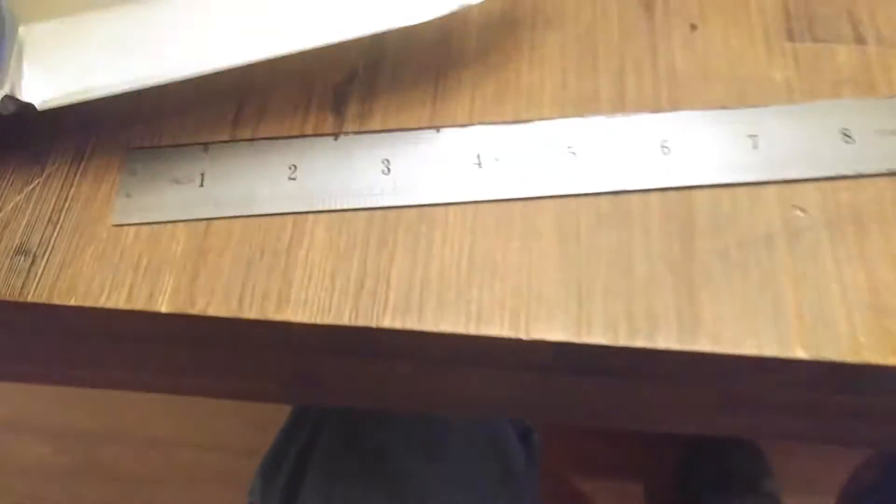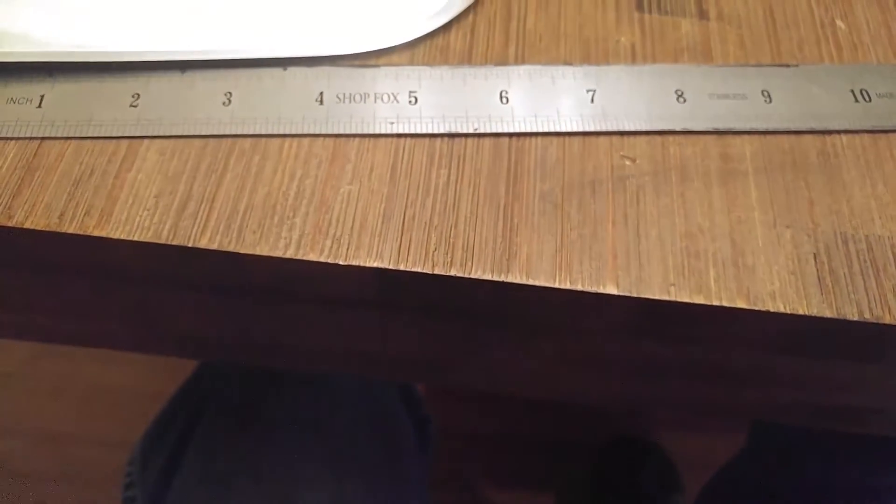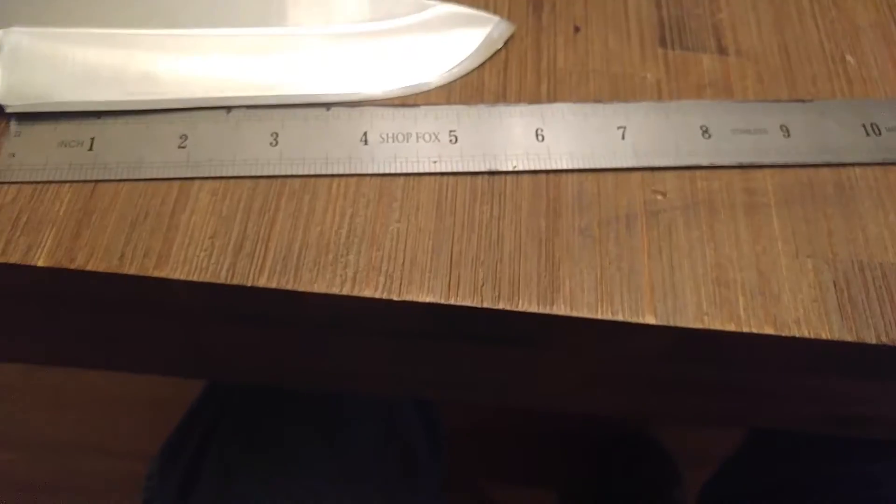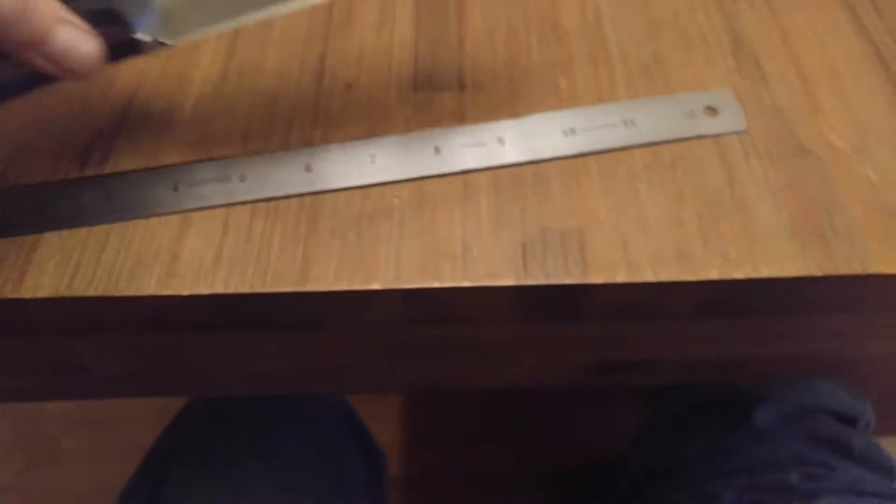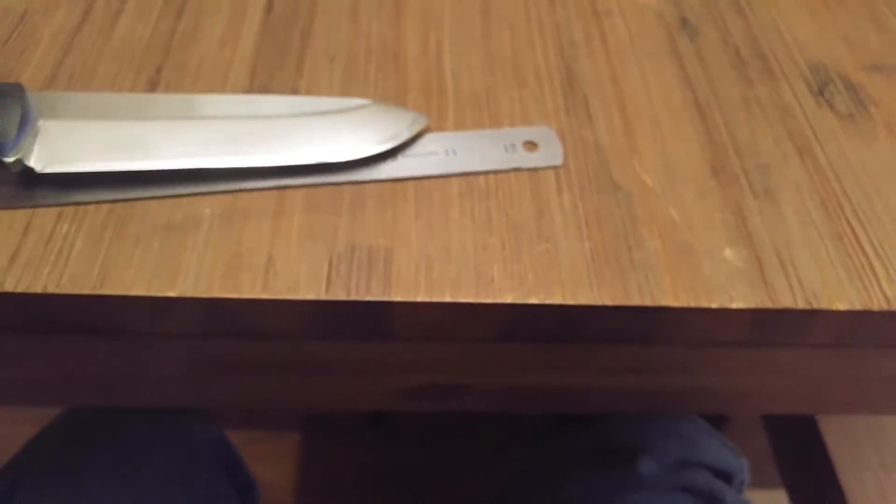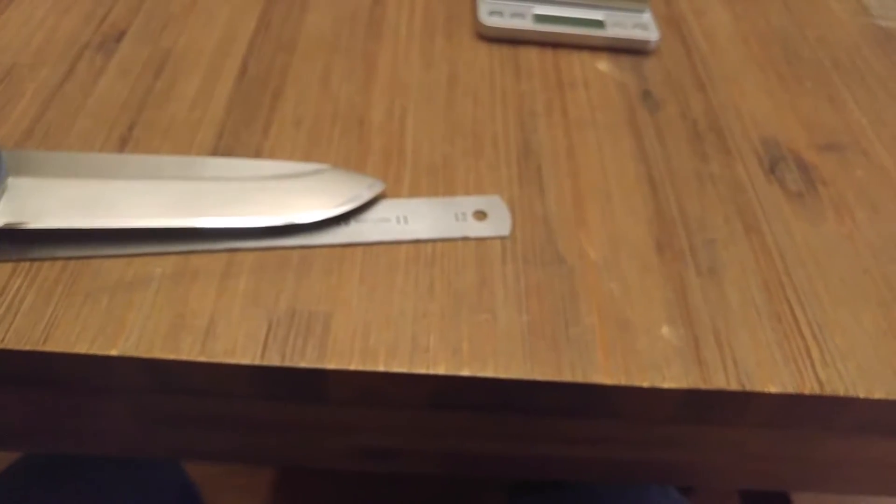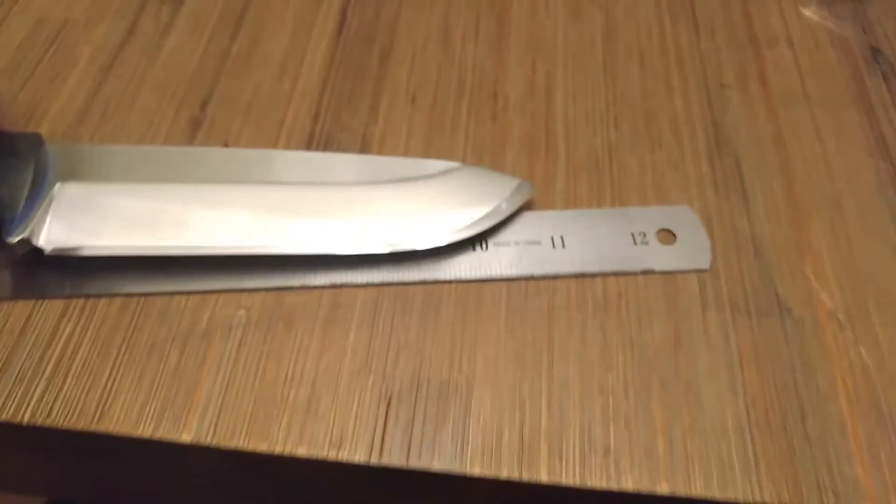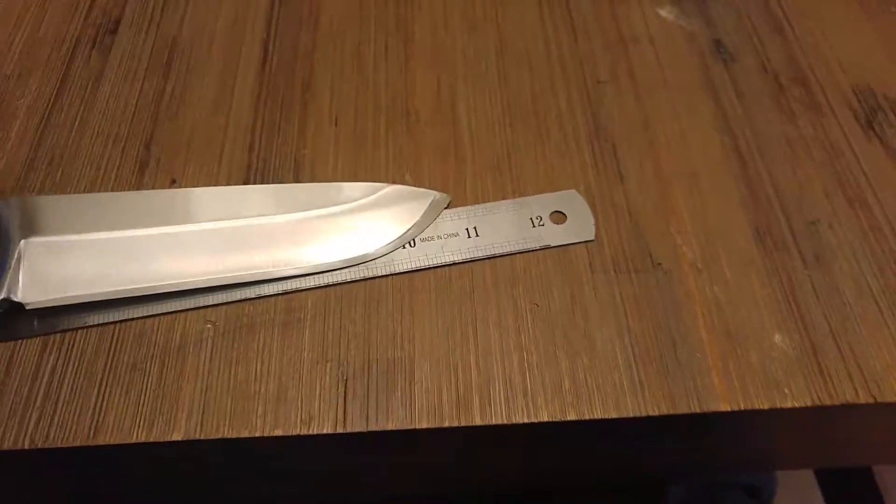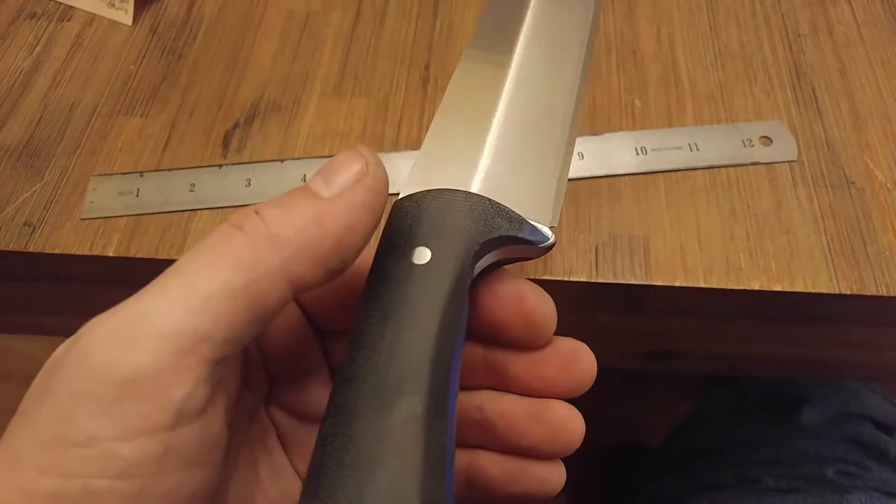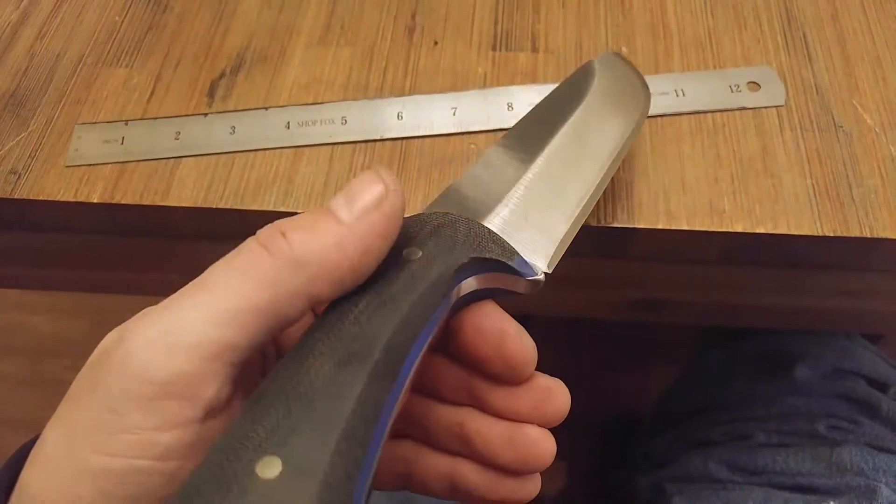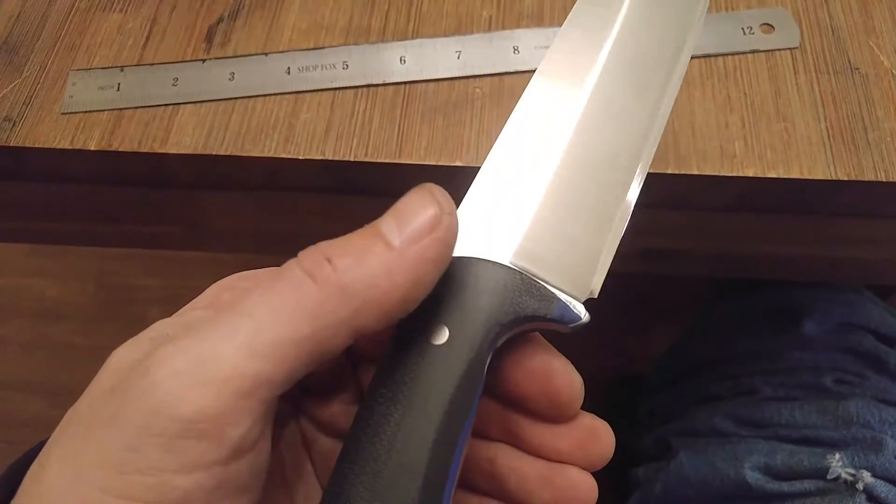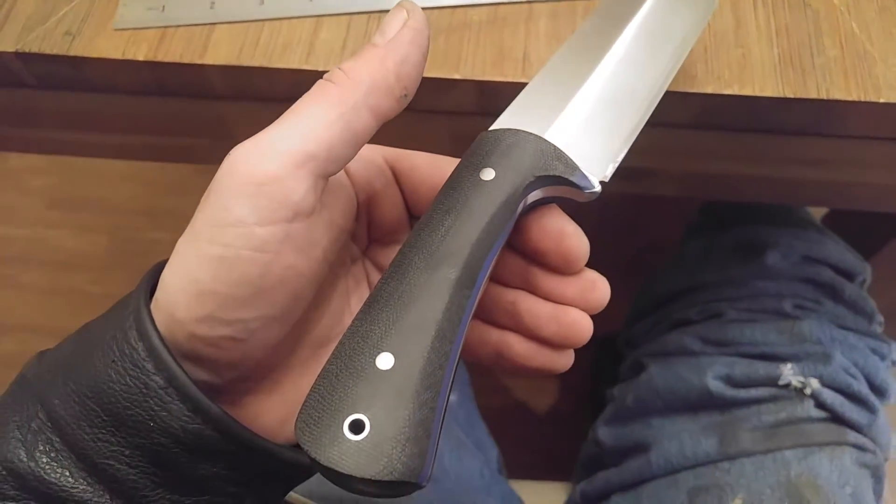Measurements: we have a sharpened length of five and seven eighths to the bolster, blade length of six and a sixteenth, total length of ten and seven eighths. Point of balance is right here at the finger groove right behind the guard.